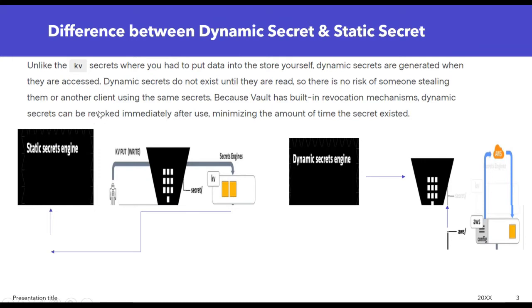Because Vault has a built-in revocations mechanism, dynamic secrets can be revoked immediately after use, minimizing the amount of time the secret exists. By default, Vault gives the facility to revoke any new access key and secret key which has been generated — after 768 hours it will be automatically revoked. However, if you want to revoke immediately, there is a command and you can do that.